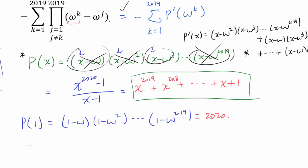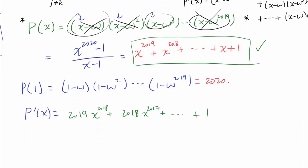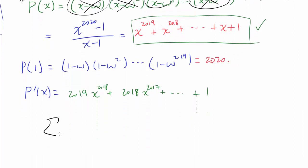The only thing blocking our path is evaluating the summation from k equals 1 to 2019 of p prime of omega to the k. Let's find p prime of x explicitly. Differentiating x to the 2019 plus x to the 2018 plus ... plus x plus 1, we get 2019 x to the 2018 plus 2018 x to the 2017, all the way down to just 1.